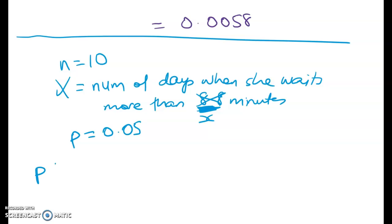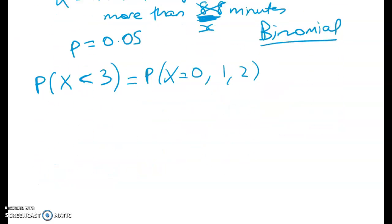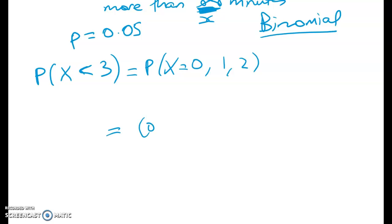So what am I trying to find? Well we want to have the probability that she has to wait for that time on fewer than three days. So it's the probability that x is less than three. And it's a binomial problem now. Nothing to do with normal distribution. So that's equal to the probability that x equals zero, one or two. So that's going to be equal to 0.95 to the power of 10 plus 10 times 0.05 times 0.95 to the 9 plus this last one.